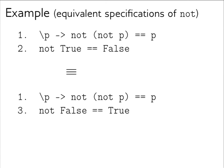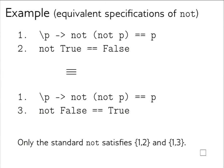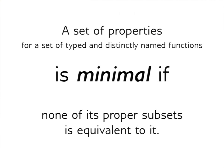Now an example of equivalent specifications of `not`. These two, despite being written differently — the second property is either `not True = False` or `not False = True` — are equivalent, because only the standard `not` function satisfies both. Onto the last definition: a set of properties is minimal if none of its proper subsets is equivalent to it.